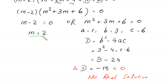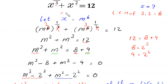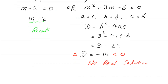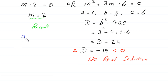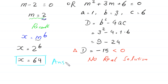Now to find x, recall that we supposed x equals m to the power 6. Substituting m equals 2, we get x equals 2 to the power 6, which equals 64. This is the final value of x and the final answer of this equation.